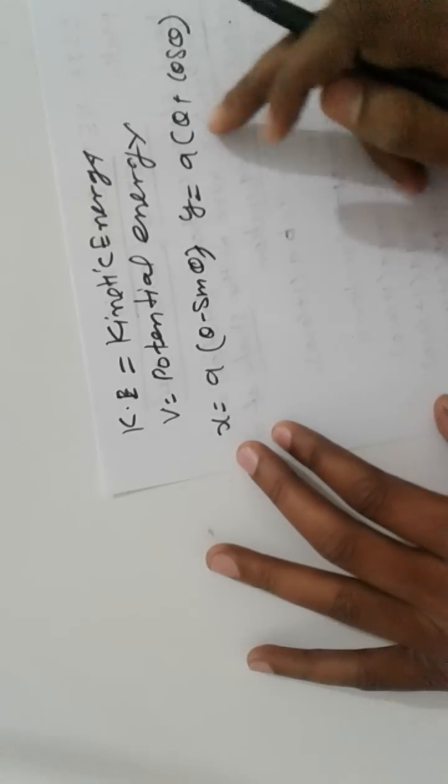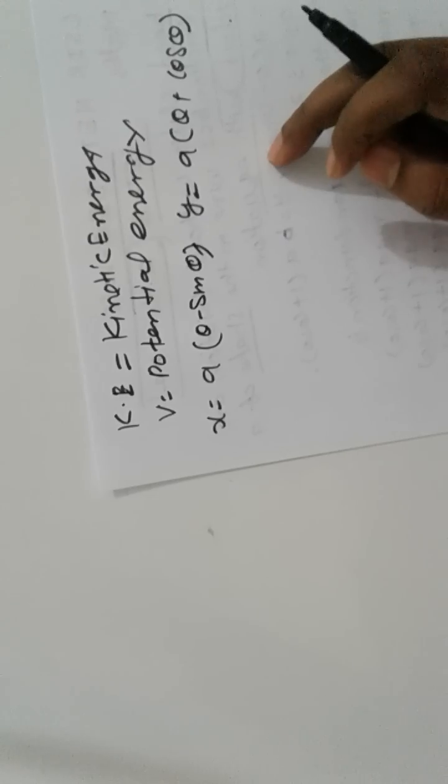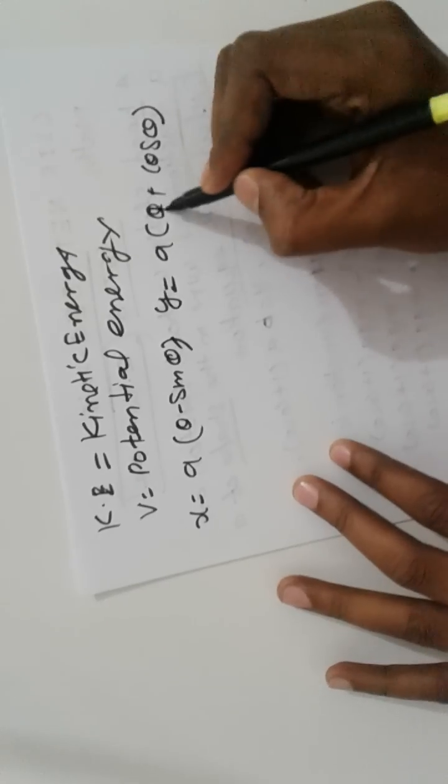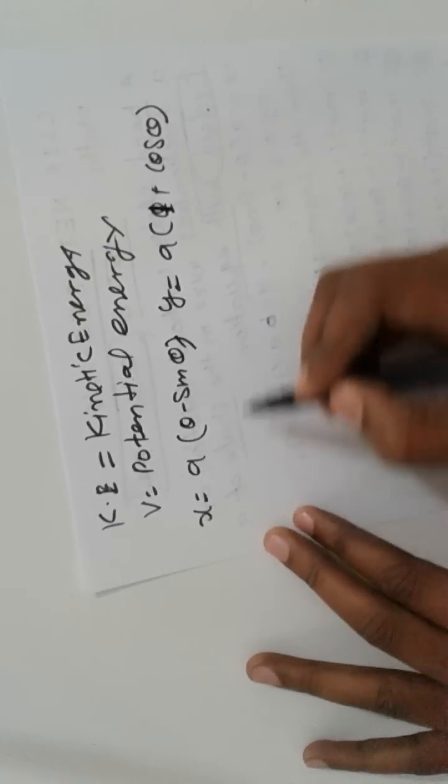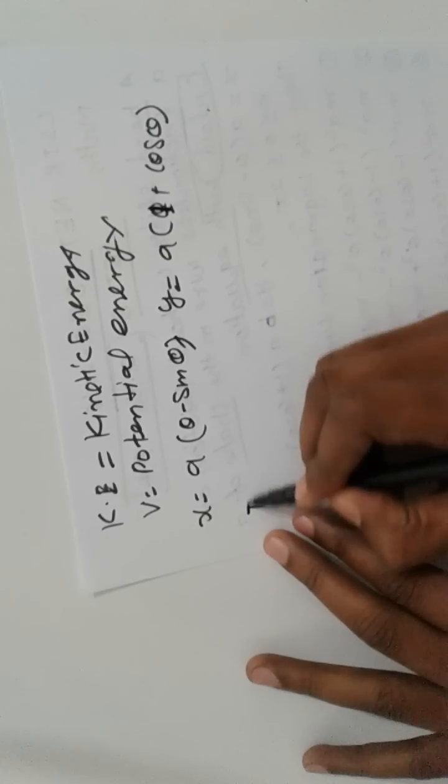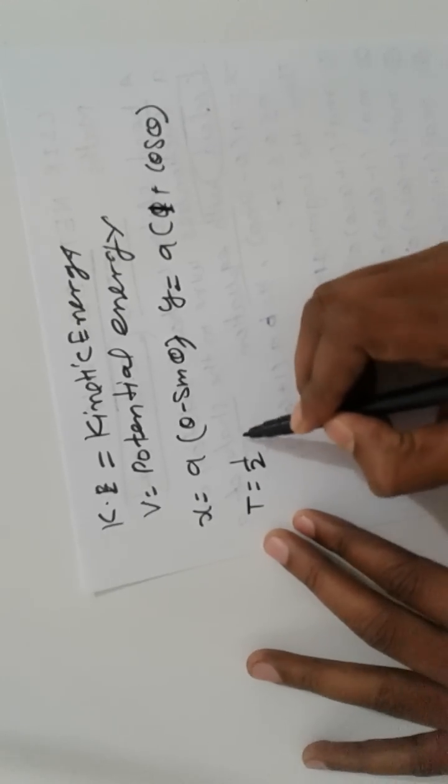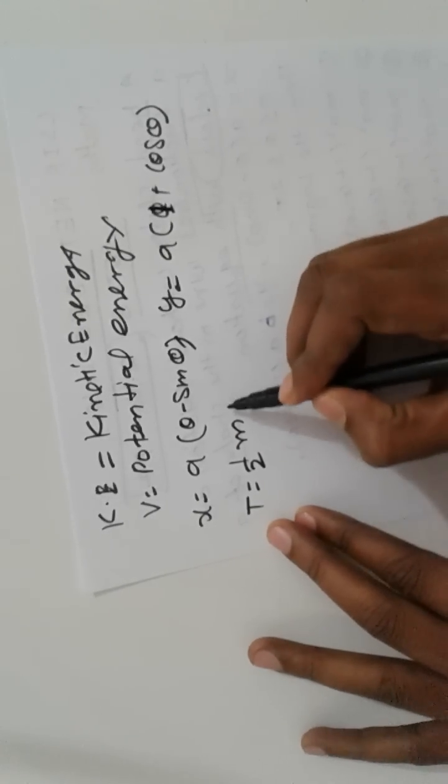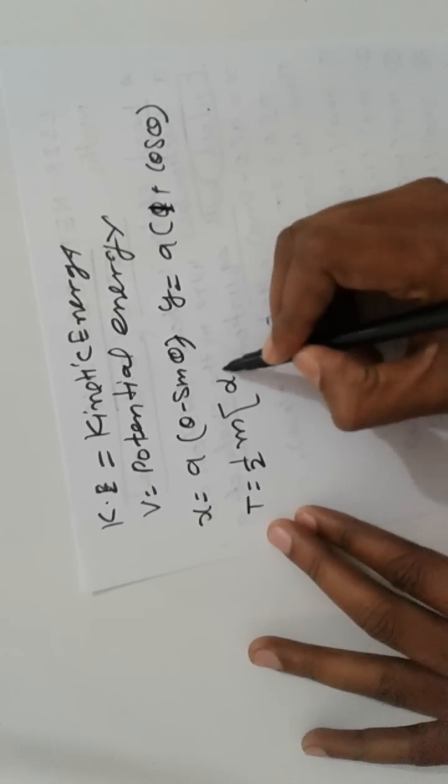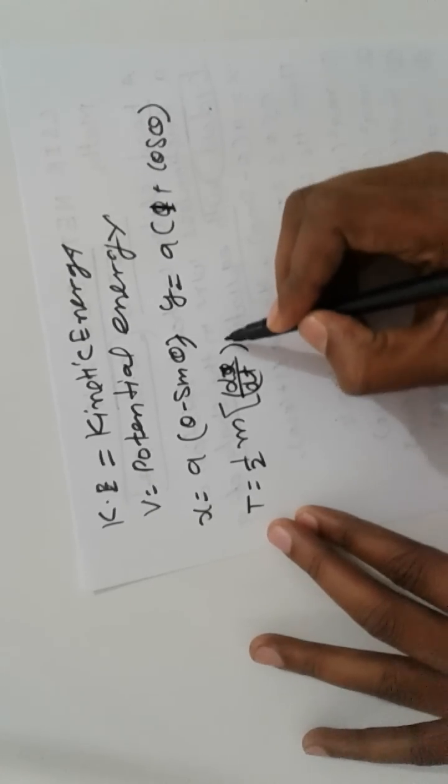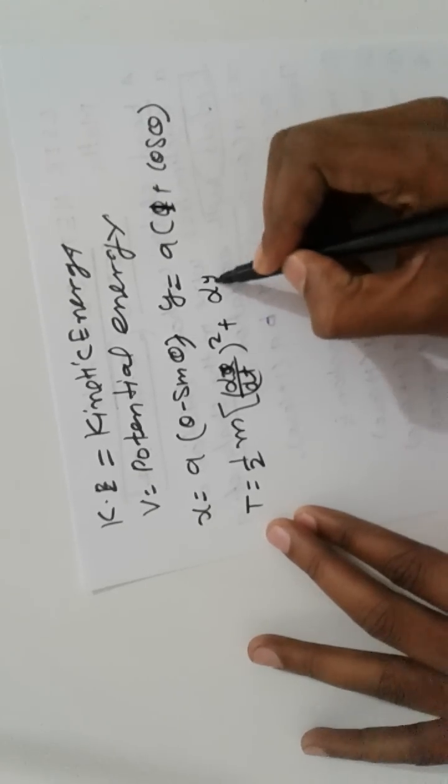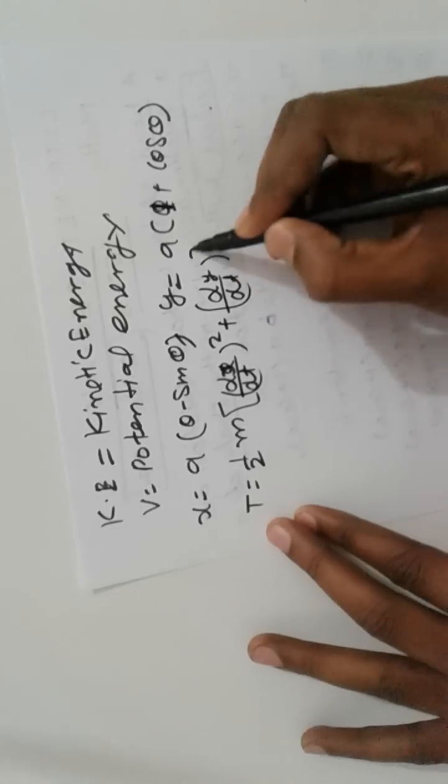So kinetic energy T is equal to one-half m times the quantity dx/dt squared plus dy/dt squared.